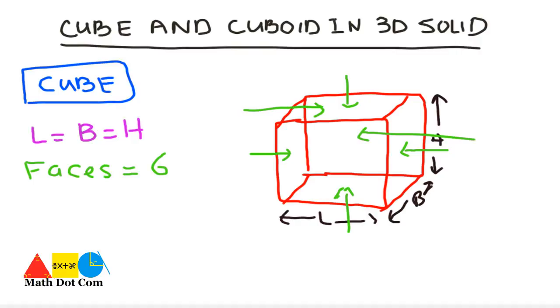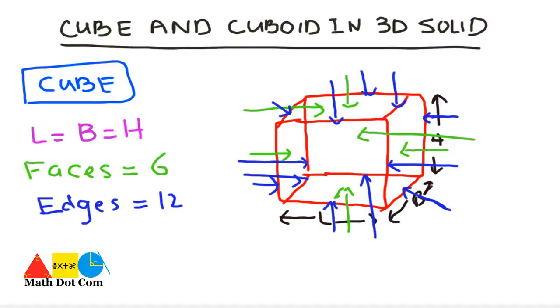Besides faces, another thing is edges. Let's label the edges now. How many edges are there? There are 12 edges in the cube. Well, the edges are the places where the 2 faces meet. So, let's label them as 1, 2, 3, 4, 5, 6, 7, 8, 9, 10, 11 and 12. These are the 12 edges in the cube.